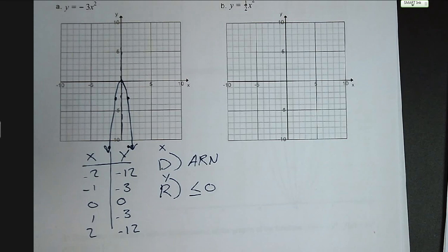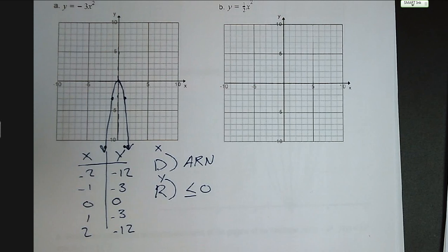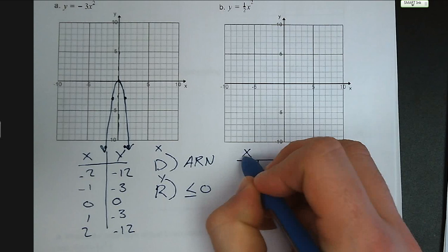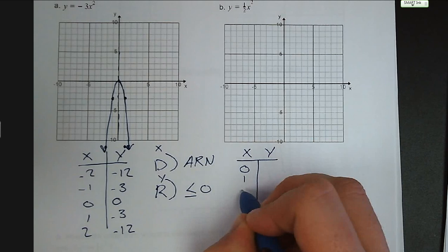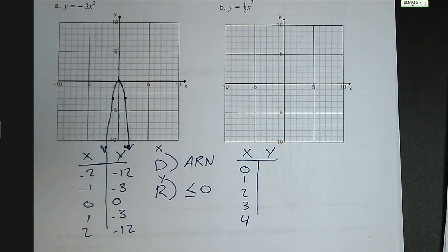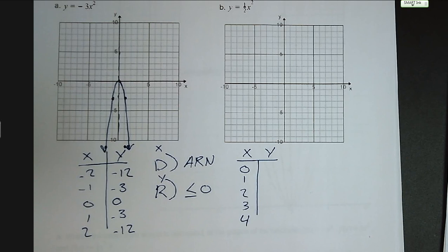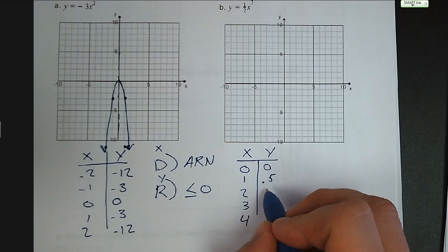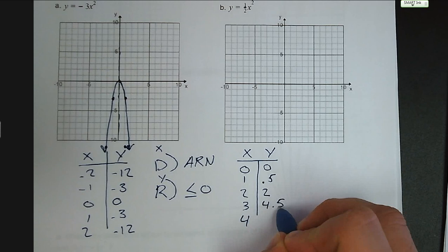For letter B, we've got y equals one-half x squared. Let's put a table together using 0, 1, 2, 3, and 4. Mr. Boland uses the approach of work smarter, not harder — since a parabola is symmetrical, I really only need to figure out values for one side of my vertex and then mirror them to the other side. So: 0 squared times one-half is 0; 1 squared times one-half is 0.5; 2 squared times one-half is 2; 3 squared times one-half is 4.5; 4 squared times one-half is 8.